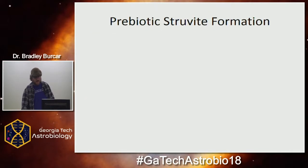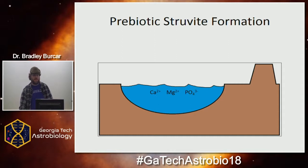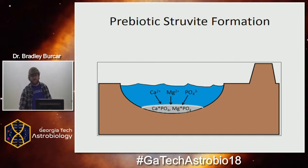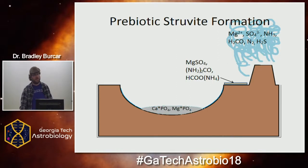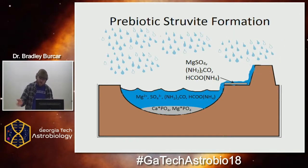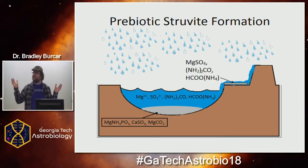So we started thinking: can you do this in a laboratory? We tried to synthesize struvite, which would be a much better source for phosphorylation. In the prebiotic model, you can have a pool on the early Earth full of calcium, magnesium, and phosphate — it would precipitate and form this mineral at the bottom. Then you drive off all the water; local outgassing from volcanoes and hydrothermal vents could provide magnesium, sulfate, urea, and formate. The rain could wash it into the pool, and you get the conversion to struvite — instead of calcium phosphate, now you have a struvite layer. You've mobilized the phosphate.